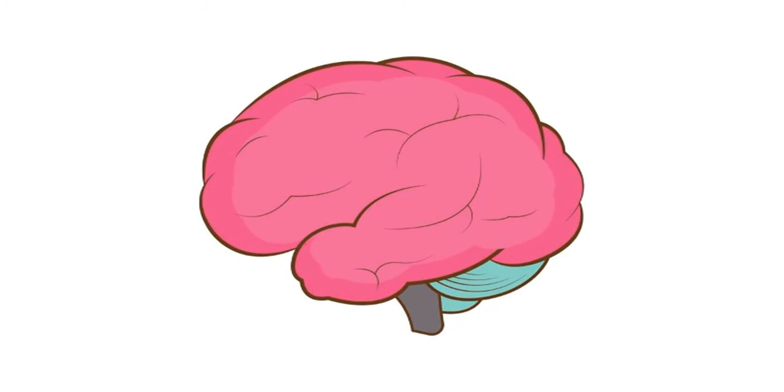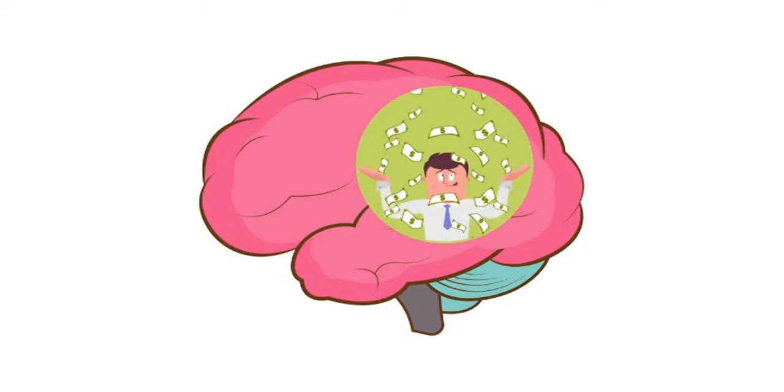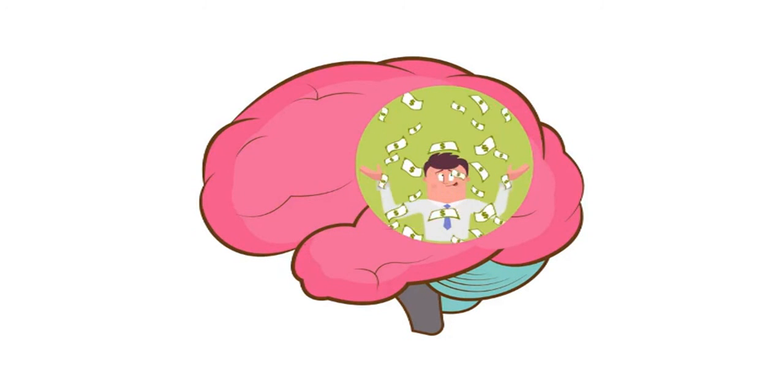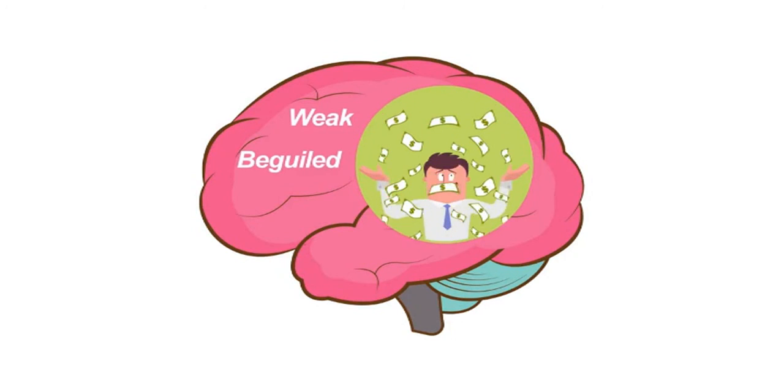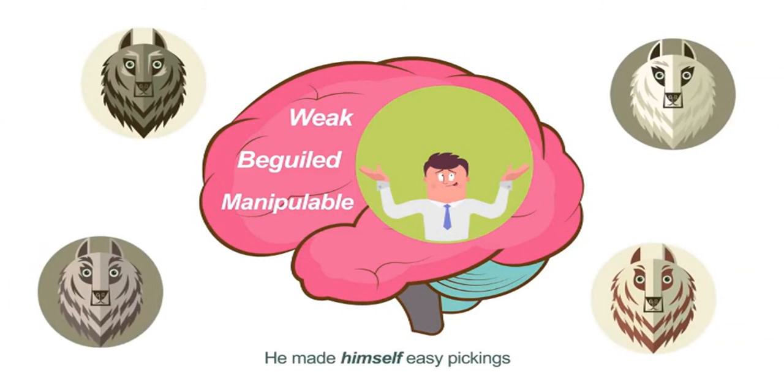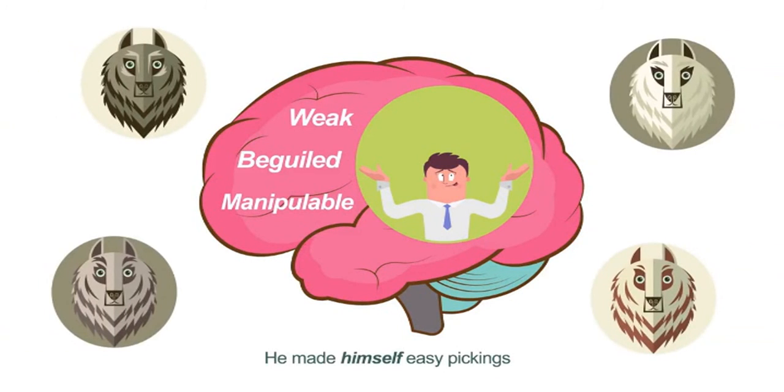But if we take a closer look at the problem, there is a very important lesson to be learned, which is, of course, not out there, but is within Joseph. Namely, it was he who had fantasies about getting rich too quickly. And it was this that made him weak, beguiled, easily manipulable. He was, therefore, easy pickings for the manipulators out there, just like a wolf can smell a wounded sheep from miles afar.